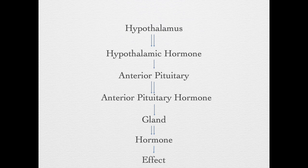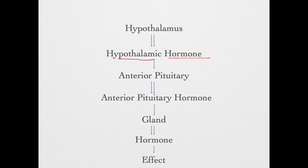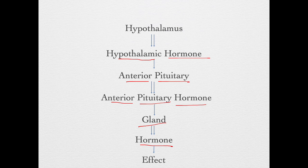The next gland is the hypothalamus. The hypothalamus is interconnected with the pituitary gland. The hypothalamus secretes hypothalamic hormones which enter the anterior pituitary via the blood supply and cause the release of anterior pituitary hormones. The anterior pituitary hormones then go to the different glands of the body, causing the release of that gland's hormone and leading to the hormone's effect.